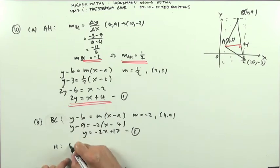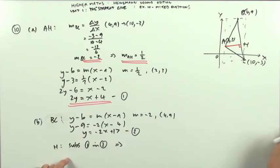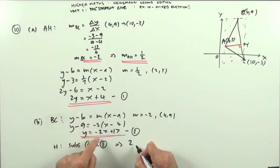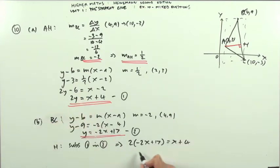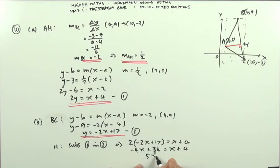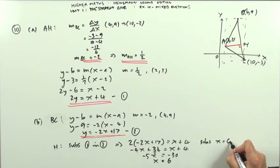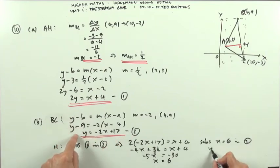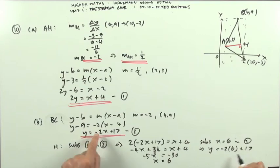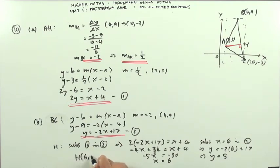Now find H by substituting equation 1 into equation 2. From equation 1: 2y = x + 4. Substituting into equation 2: 2y = 2(−2x + 17) = −4x + 34. So −4x + 34 = x + 4, giving 5x = 30... wait, −5x = −30, so x = 6. Then substitute x = 6 into equation 2: y = −2(6) + 17 = −12 + 17 = 5.